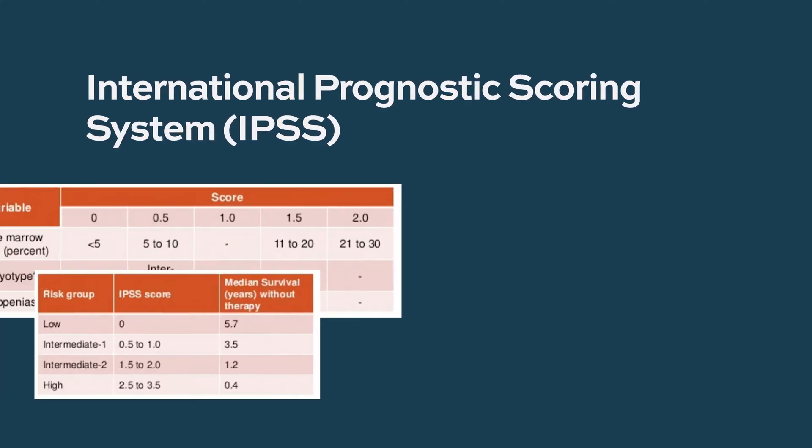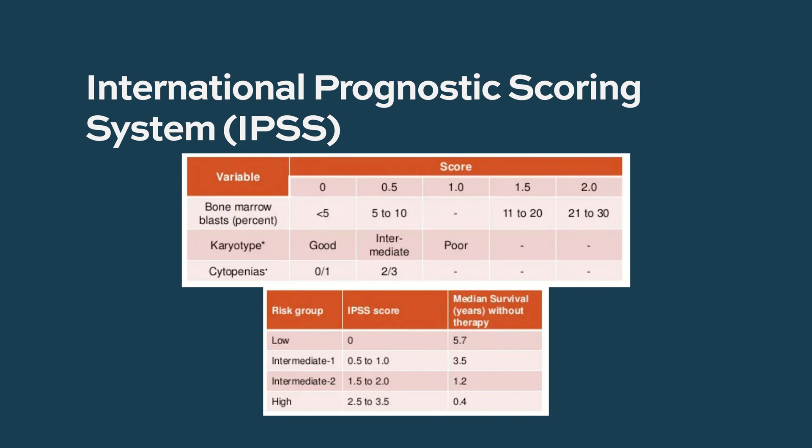What we use is a system called the International Prognostic Scoring System, or IPSS, as our default staging system. There's a revised version of that, and even a version that incorporates genetic mutations called the IPSS molecular.